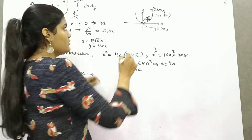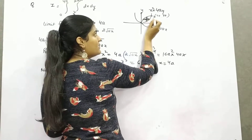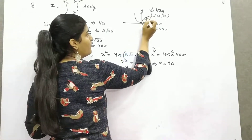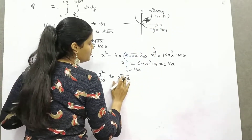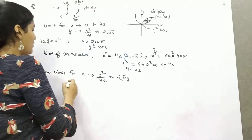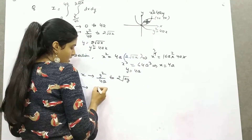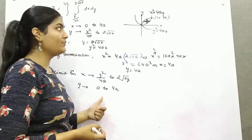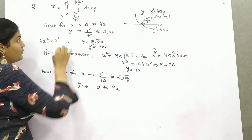For the new limits, x moves from one curve to the other. For the first curve x = y²/4a, and for the second curve x = 2√(ay). The new limit for y moves from 0 to 4a, since the region starts at the origin and the point of intersection is at y = 4a.